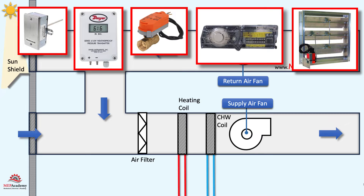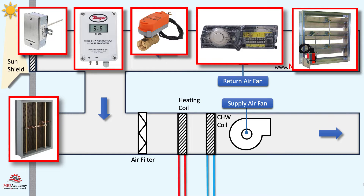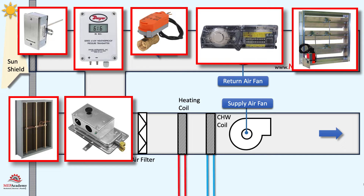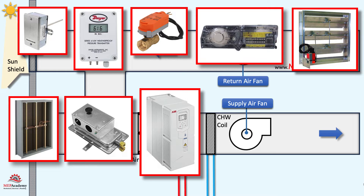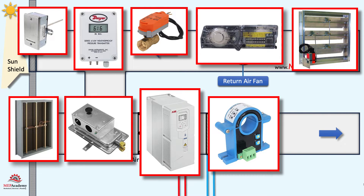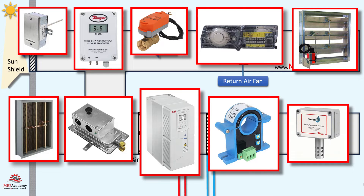We'll start with a constant volume air handler that has a supply and return fan. We'll build this to be a variable volume air handler. The advantage of a VAV air handler is that it can optimize the diversity of the zones to save energy by reducing the fan speed. There are heating hot water and chilled water coils.